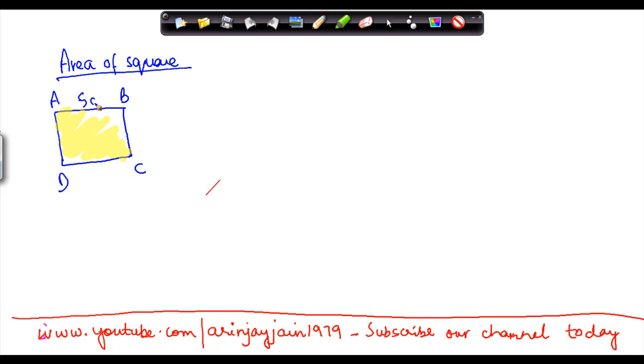Let's say suppose the side of a square is 5 cm. Then the formula for the area of the square is equal to side into side. So if the side of a square is 5 cm, we multiply 5 cm by 5 cm and we get 25 cm square.